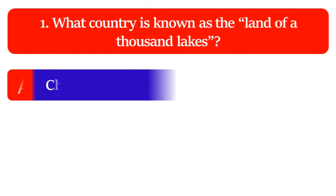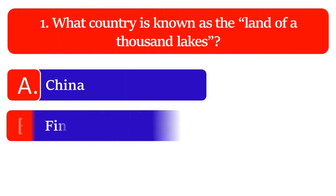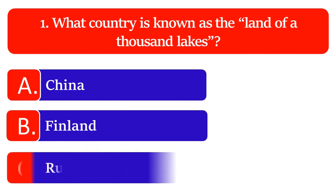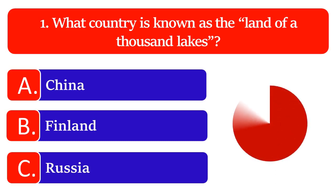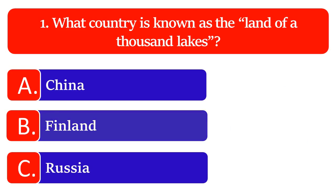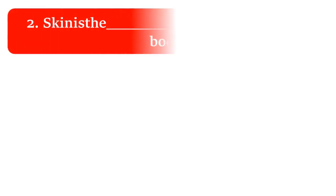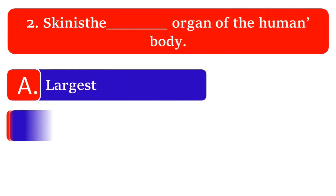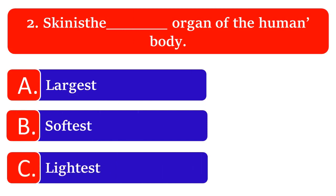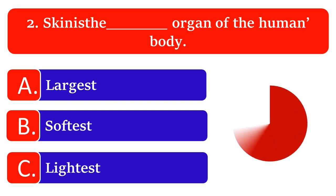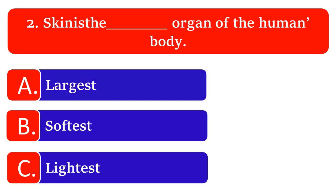What country is known as the land of thousand lakes: China, Finland or Russia? The great answer is Finland. Skin is the dash dash organ of the human body: largest, softest or lightest? The great answer is the largest.